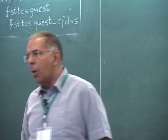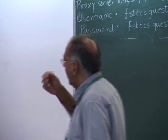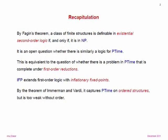If you allow first-order reductions to use an order on the structure, then we do have complete problems—but that's just a cheat. We can replace first-order with something like IFP and it's still equivalent: if there's a complete problem under IFP reductions, then we have a logic for P, and conversely. IFP extends first-order logic with inflationary fixed points, is powerful enough to express P-complete problems, still too weak to express evenness, and captures P-time when we have an order on unordered structures.